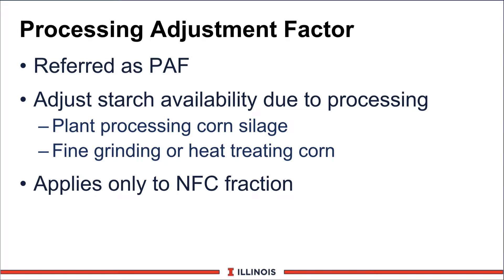Another neat addition to the new dairy NRC in the energy area is the processing adjustment factor, also referred to as the PAF. What this does is adjust for starch availability — and it's only starch. It does not apply to other nutrients due to the effect of processing. This will be very important when we look at corn silage, processing corn silage, moisture content of corn silage, and how we process corn and other cereal grains. Remember, it only applies to the NFC fraction.